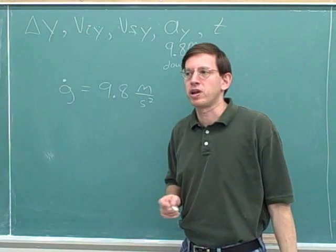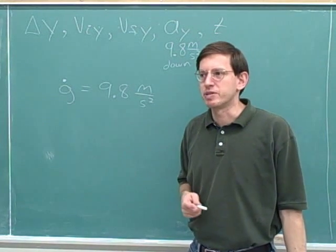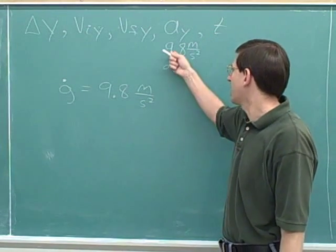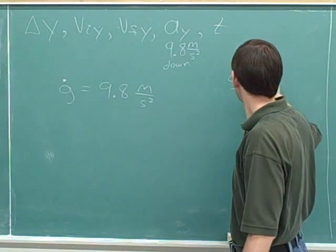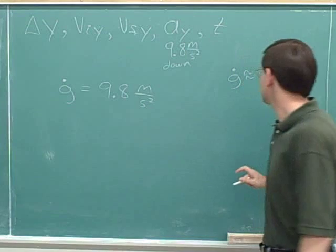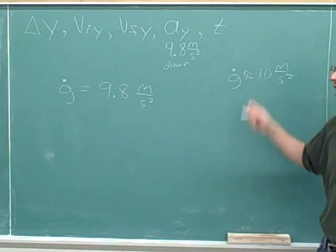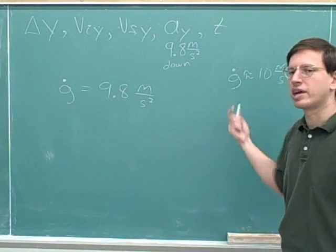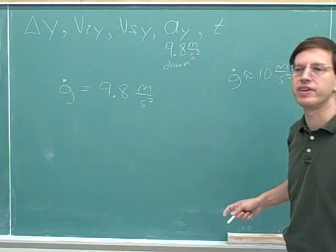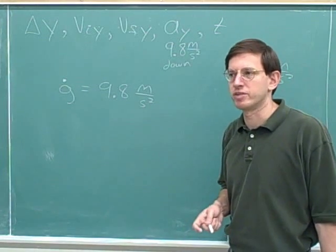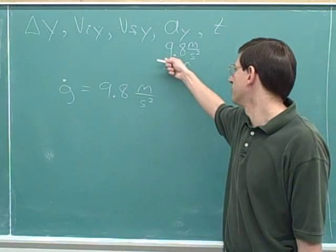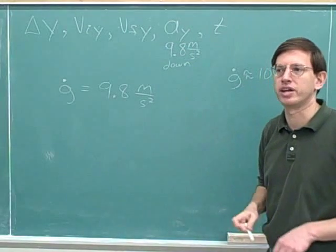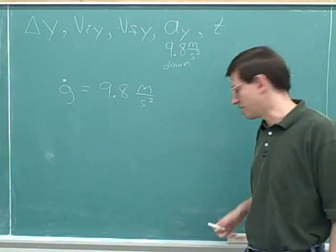Incidentally, if you're preparing for a standardized test like the MCAT, especially one where you can't use a calculator, you would usually approximate g as 10 meters per second squared. We can safely approximate g as 10 meters per second squared for such tests. But I'm not going to do that in these videos — I'm going to be doing problems assuming you're using a calculator, so we'll use the more accurate value of 9.8.